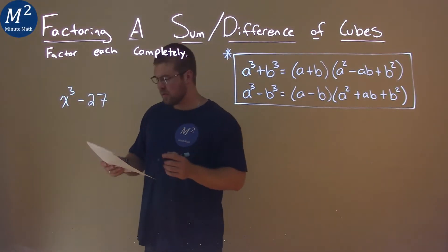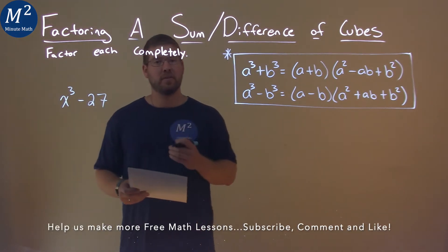We're given this problem right here, x to the third minus 27, and we need to factor this completely.